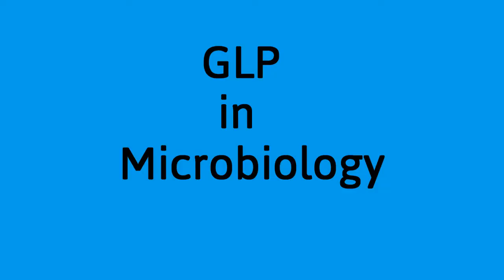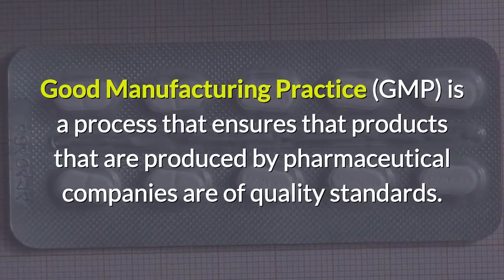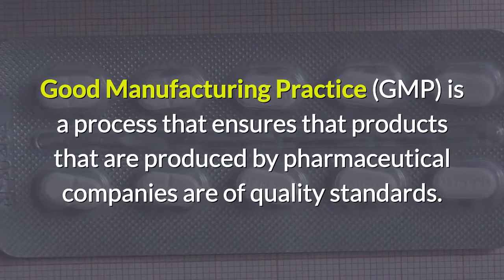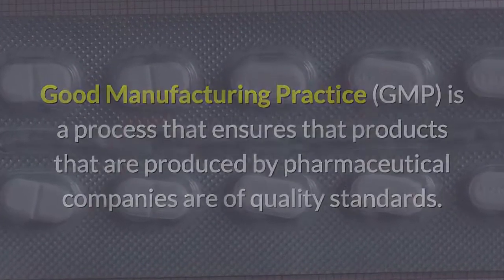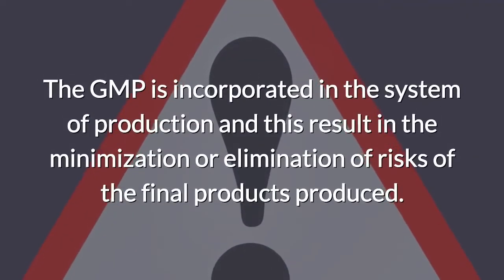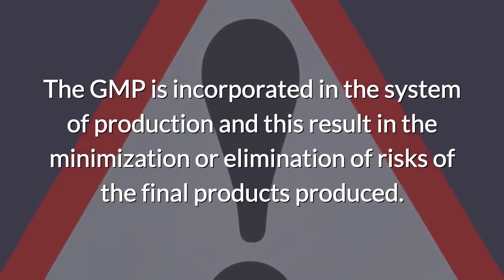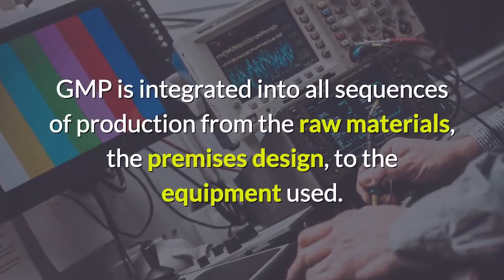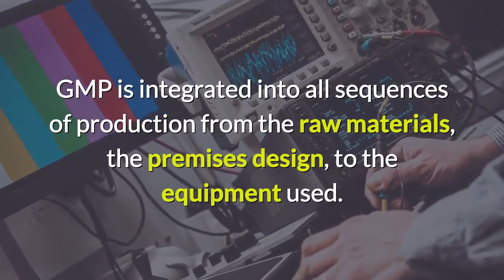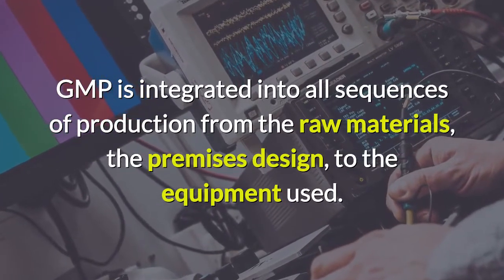Good Laboratory Practices in Microbiology Laboratory. Good Manufacturing Practice is a process that ensures that products produced by pharmaceutical companies are of quality standards. The GMP is incorporated in the system of production, resulting in the minimization or elimination of risks of the final products produced. GMP is integrated into all sequences of production, from the raw materials and premises designed to the equipment used.